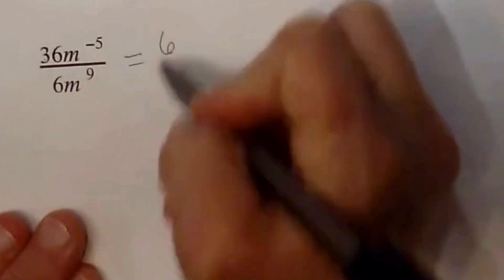The coefficients, which are 6 and 36, they do the rule. So we're just dividing. So we're actually just going to divide 36 by 6 and we get 6.